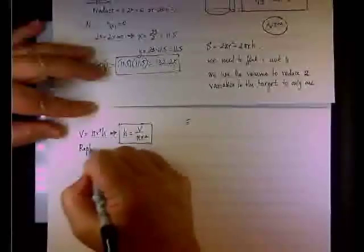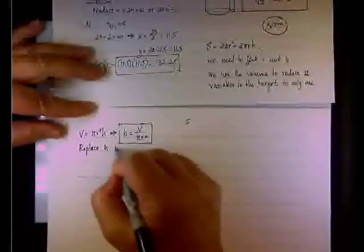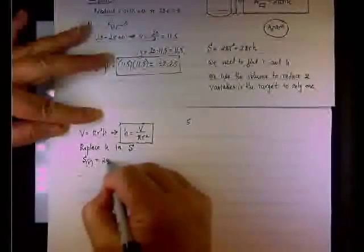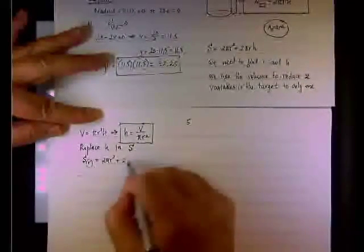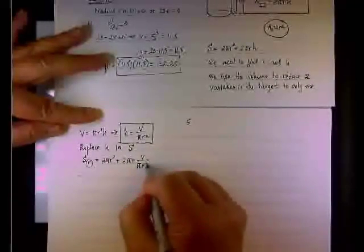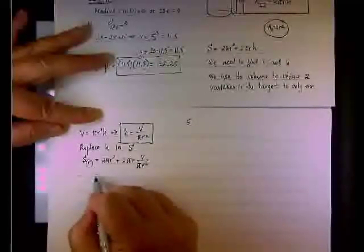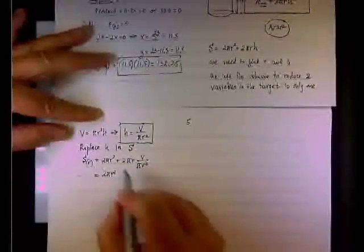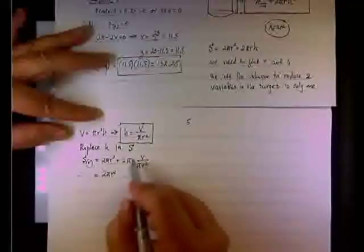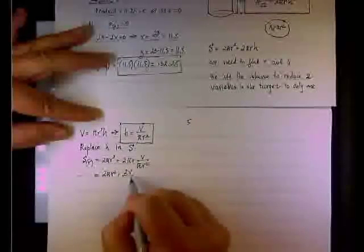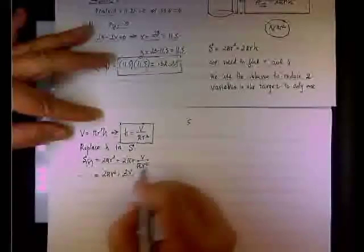So replace h in S in the target function. So now we can say S as a function of r only will be 2 pi r squared plus 2 pi r, instead of h, I have V over pi r squared. So let's change it just a little bit more. And we have 2 pi r squared. And after you eliminate, pi and pi cancel each other, r and r squared. So you end up having plus 2V divided by r.